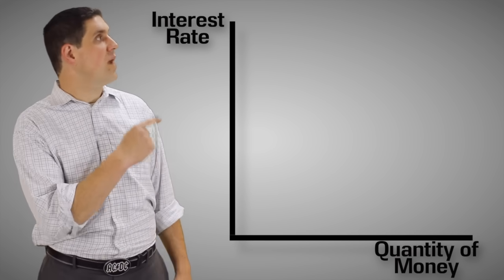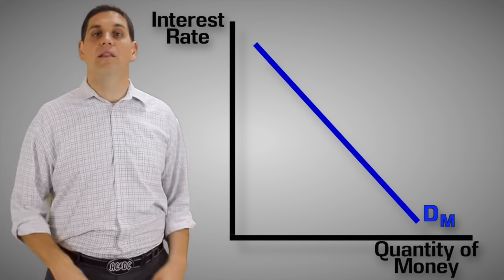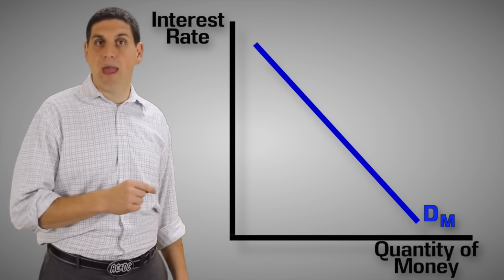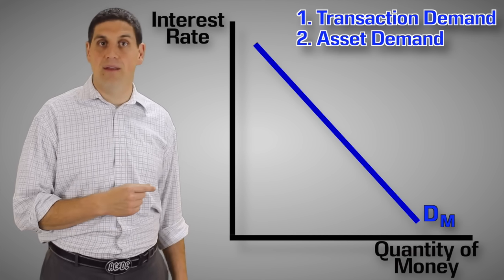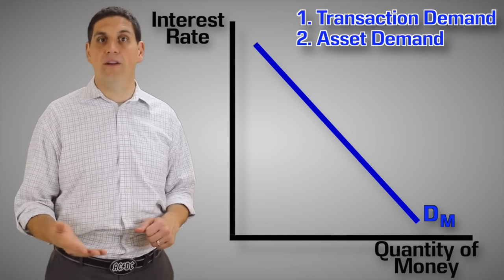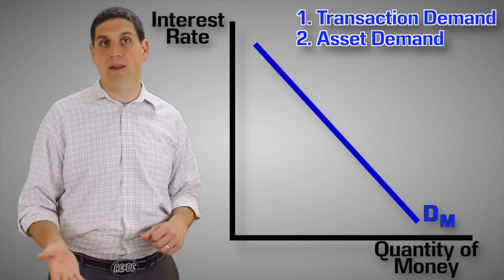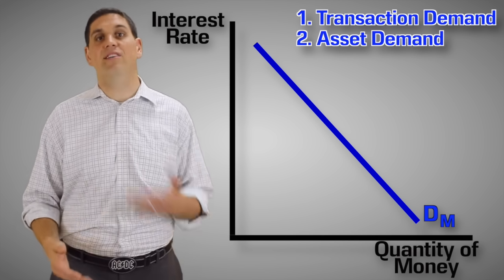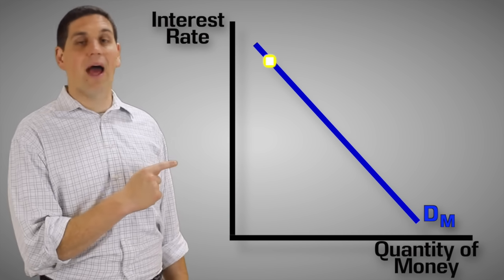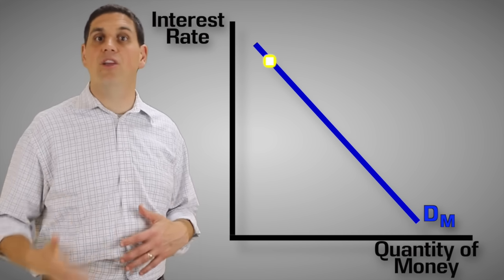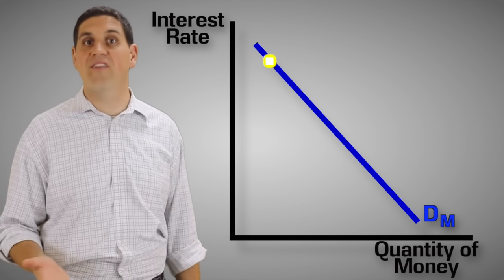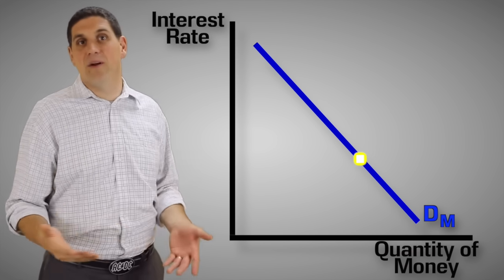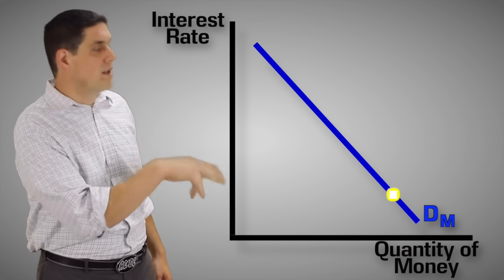So now we can start building the graph. Up here we have interest rate and down here we have the quantity of money. Let's start with the demand for money. As you can see, it's downward sloping. Now, there's only two reasons why people demand money: transaction demand and asset demand. One reason why you need money in your pocket or in your checking account is so you can go buy stuff — that's called transaction demand for money. The other reason is that people prefer having a liquid asset as opposed to stocks, bonds, or real estate. So if the interest rate is really high, the opportunity cost of holding money is very high and you do not want to hold a lot of money. However, when the interest rate falls, it's not a big deal to have money in your checking account, and so the quantity demanded increases.